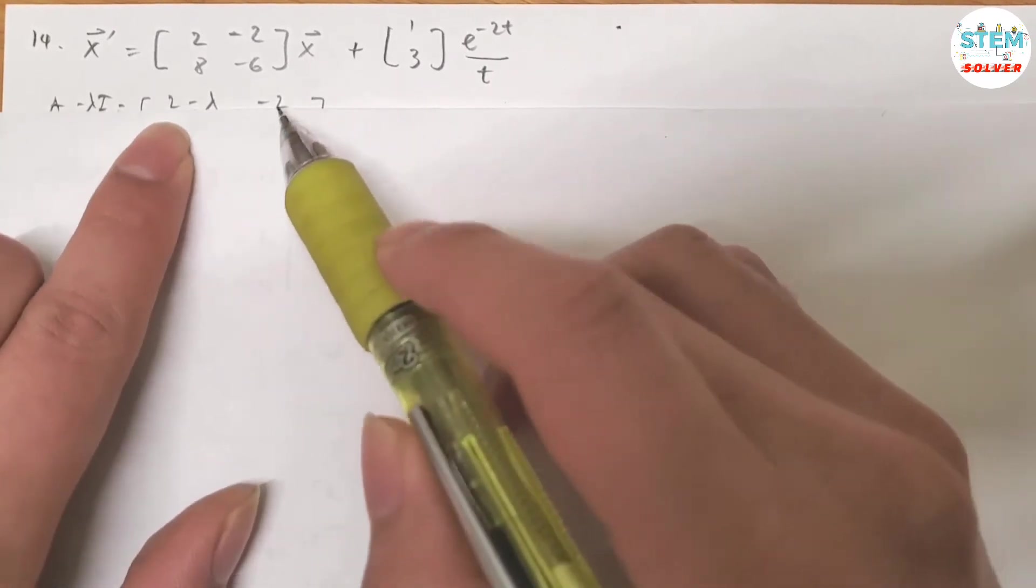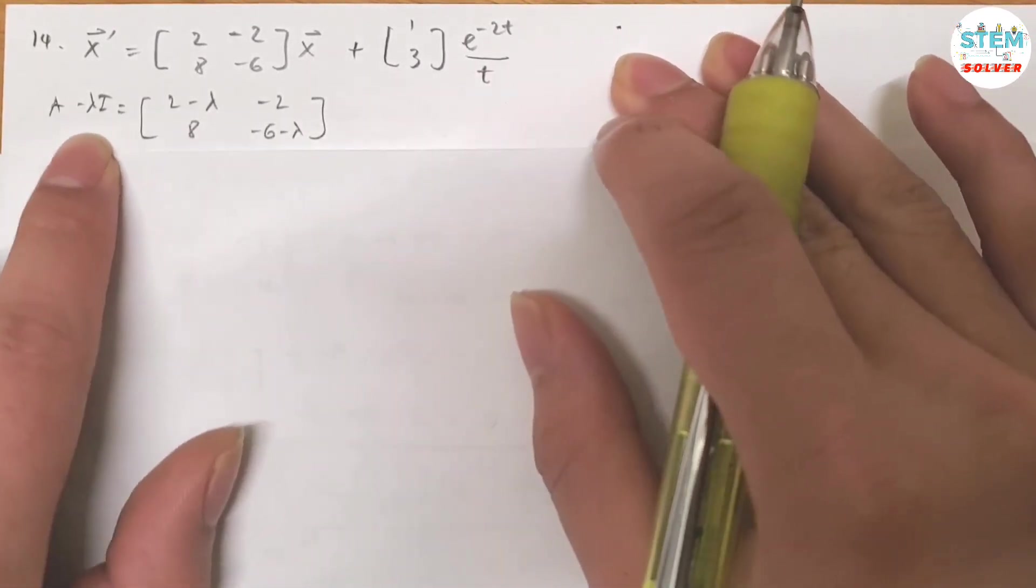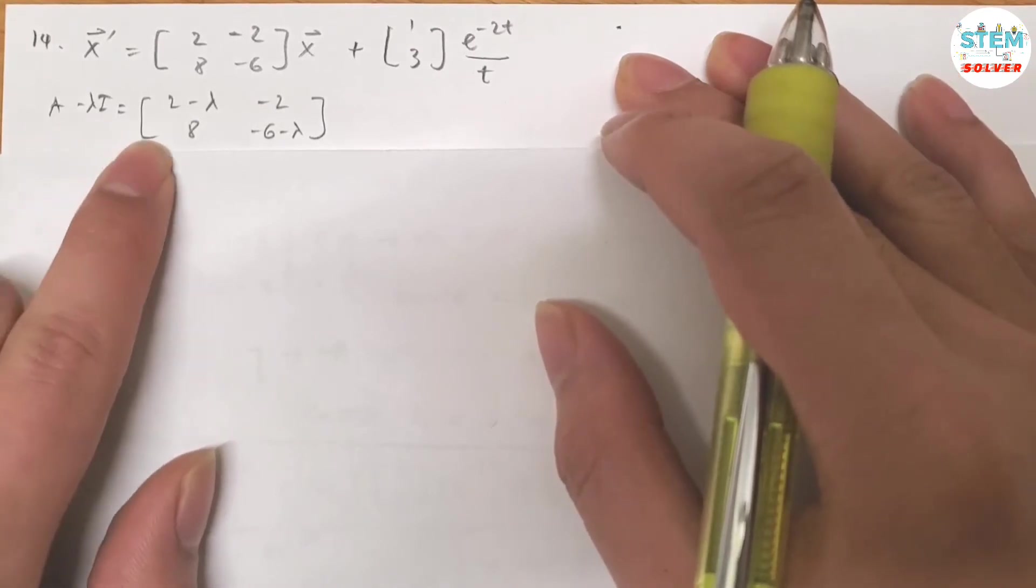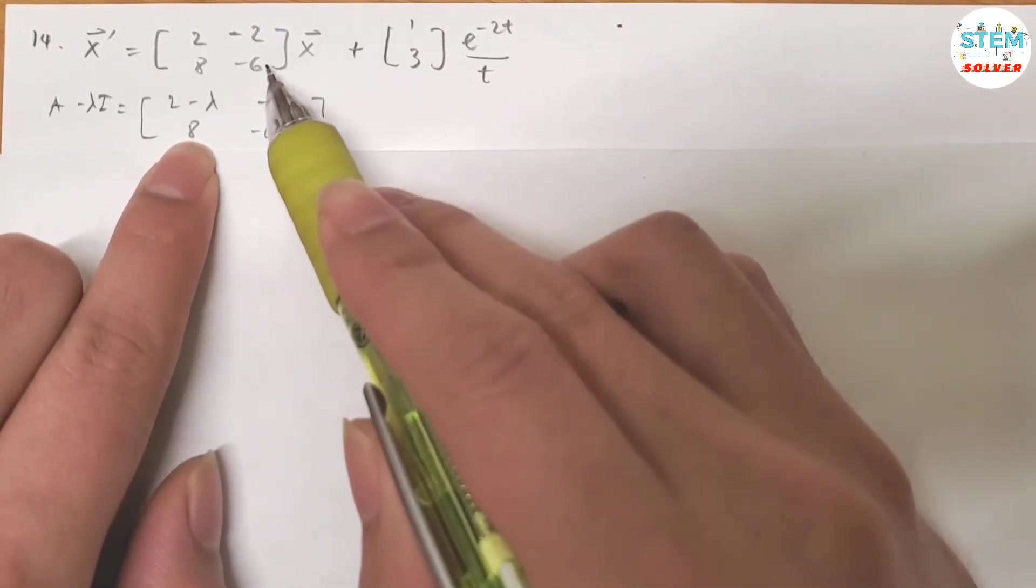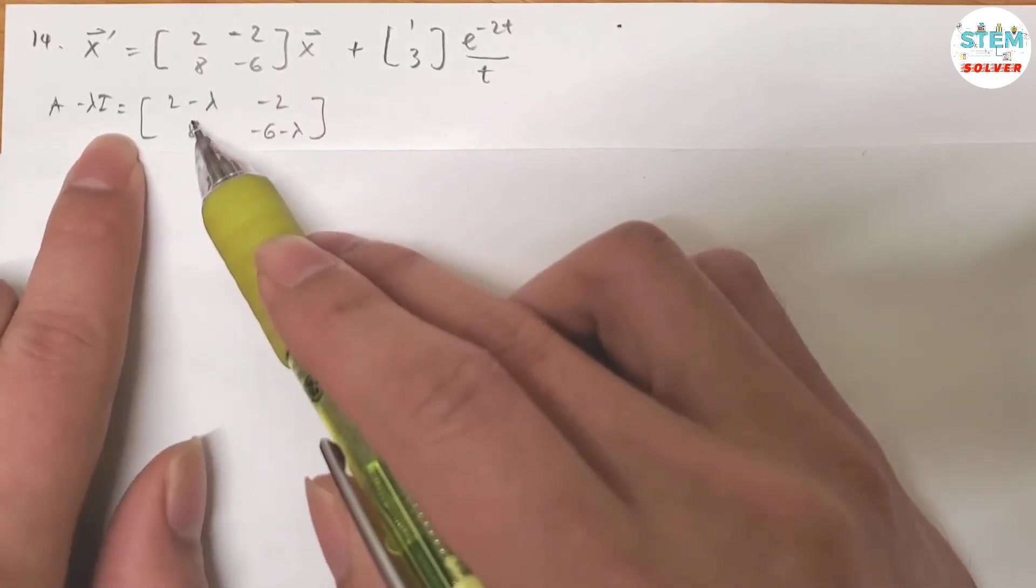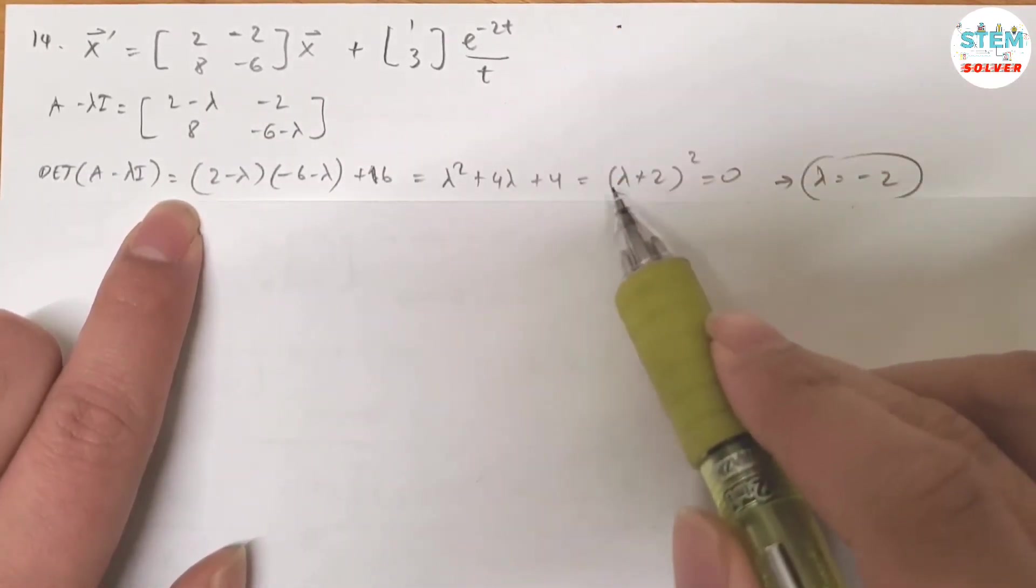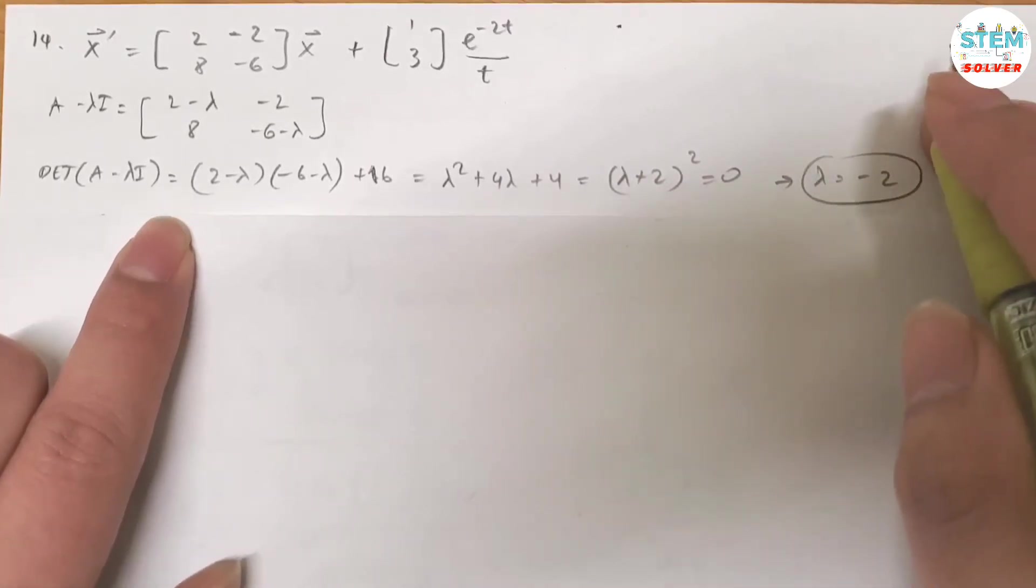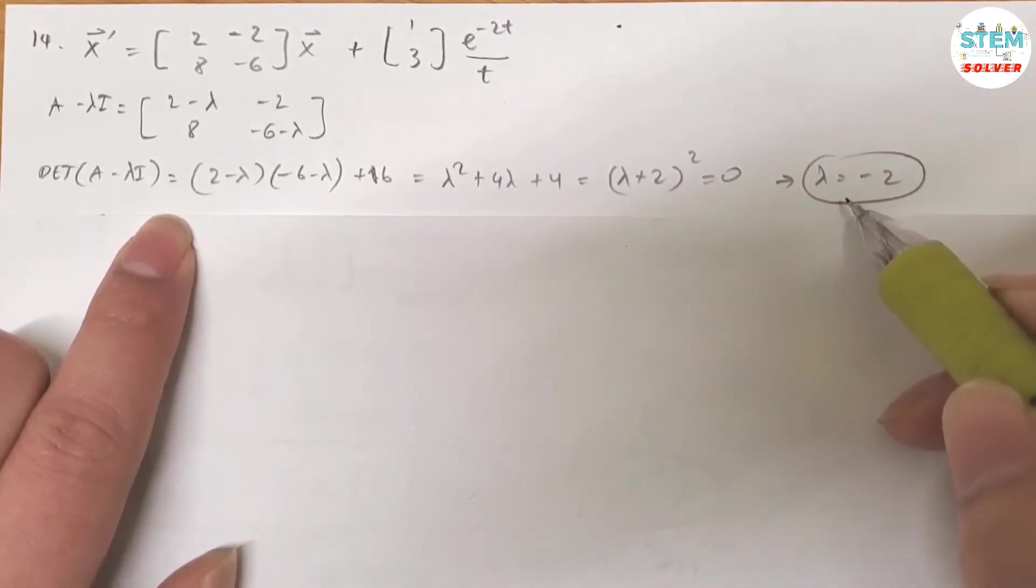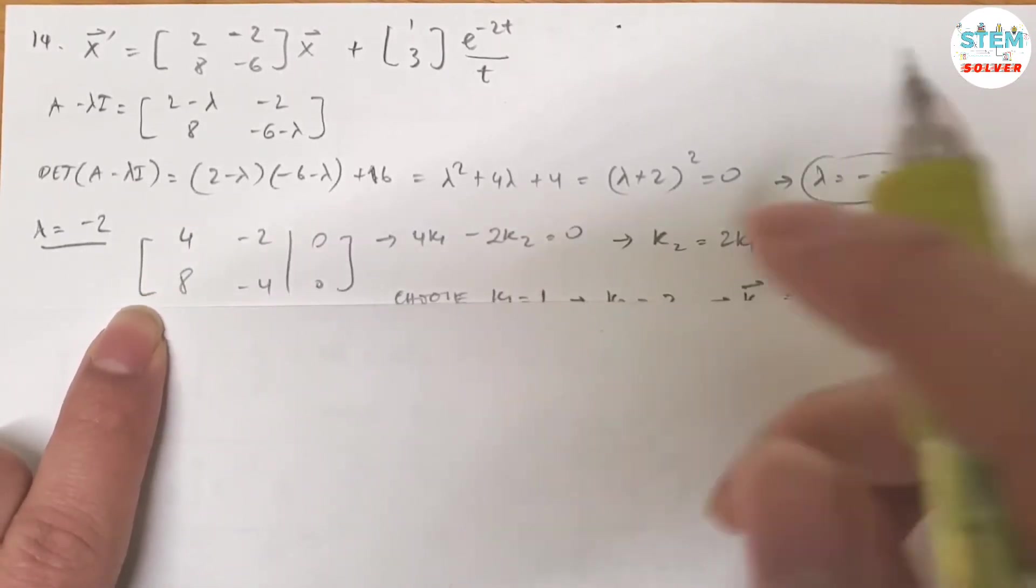For this problem, first, as always, find A minus lambda I. Let's call this matrix A. This matrix A subtracted with lambda I gives you this matrix. Then find its determinant, set it equal to 0, solve for lambda. You will get a repeated eigenvalue for lambda, which is negative 2.